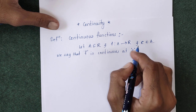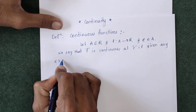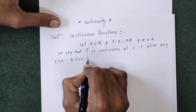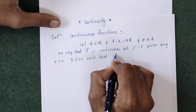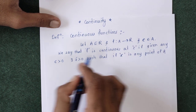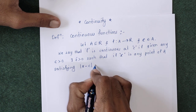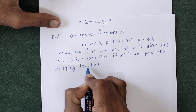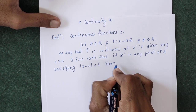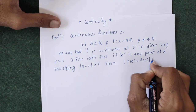Function F is said to be continuous at C if, for given any epsilon greater than 0 — similarly like the previous chapter, we will use the epsilon-delta definition — there exists some delta greater than 0 such that if x is any point of A satisfying mod of x minus C less than delta, that is, x is any point very close to C and is in the delta-neighborhood of C, then mod of f(x) minus f(C) is less than epsilon.